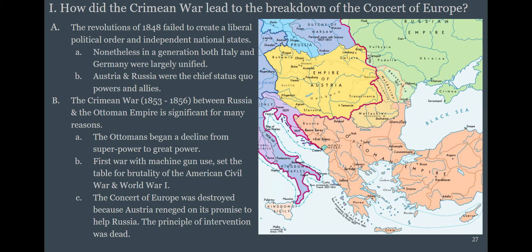The Crimean War takes place mostly in the Crimean Peninsula itself. All the other countries of Europe team up against the Russians. It's a war with machine gun use — it's brutal, with many, many people dying — and it basically says that Europe is going to become a continent of armed camps rather than a continent in concert with each other.